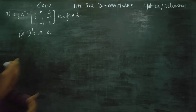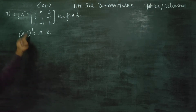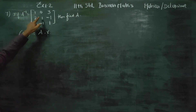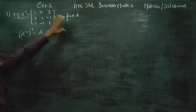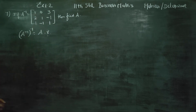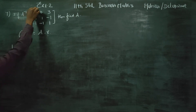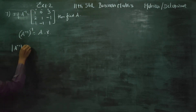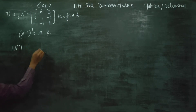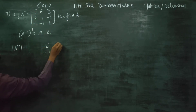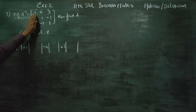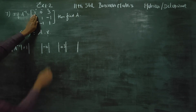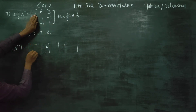First, we need to find the determinant of A inverse. Inverse is equal to A — first, get to determine the answer. Plus, minus, plus: 1 into minus, 0 into plus, 3 into right. 1 minus 1.